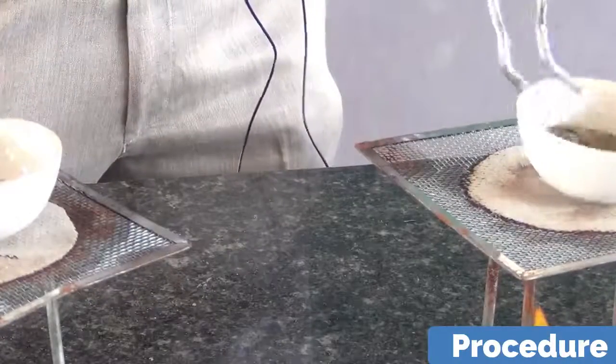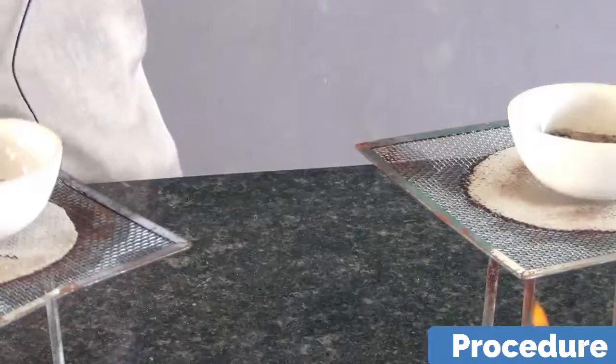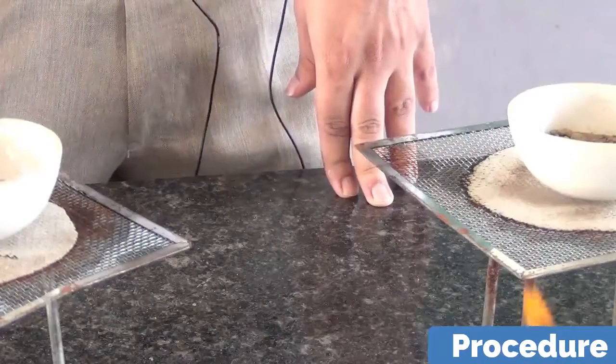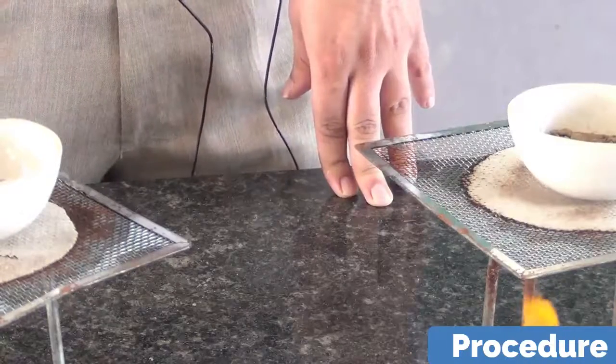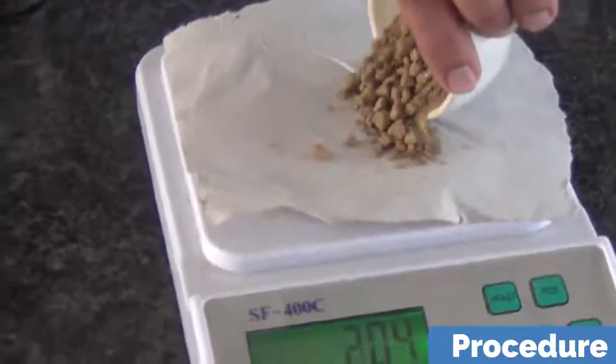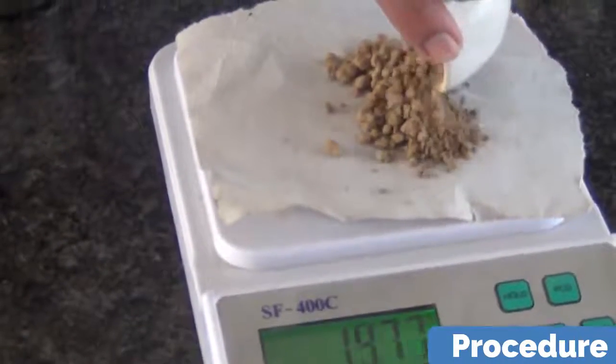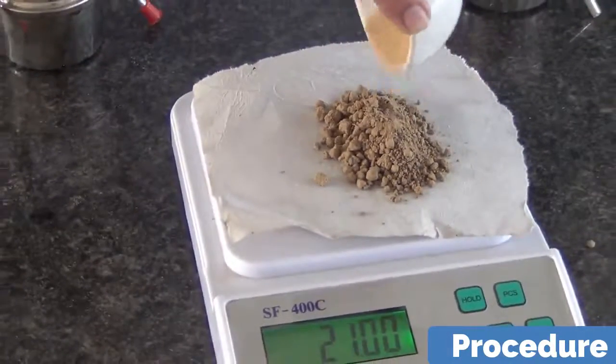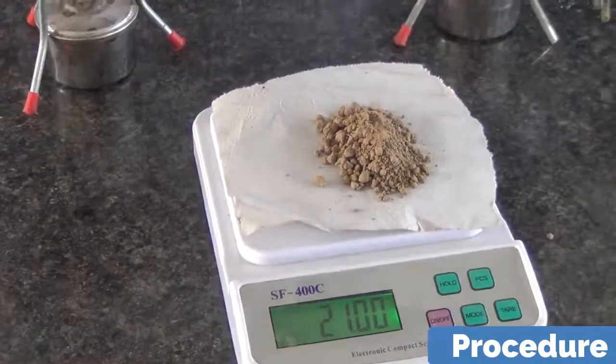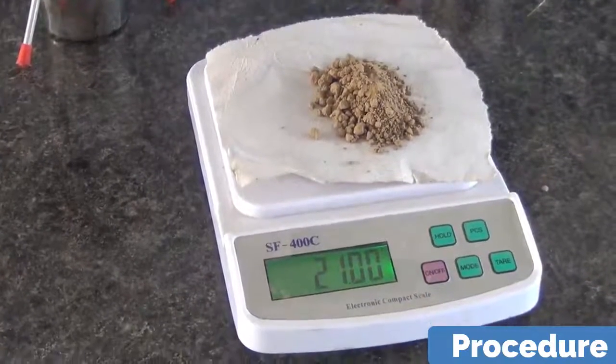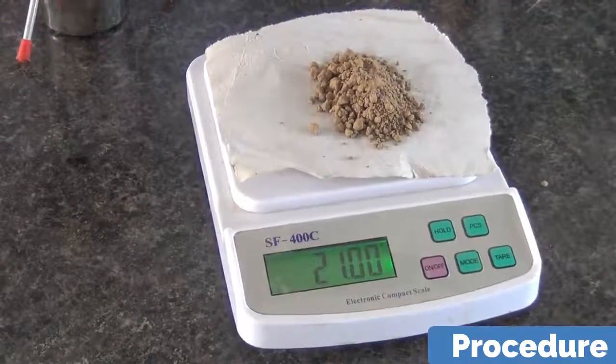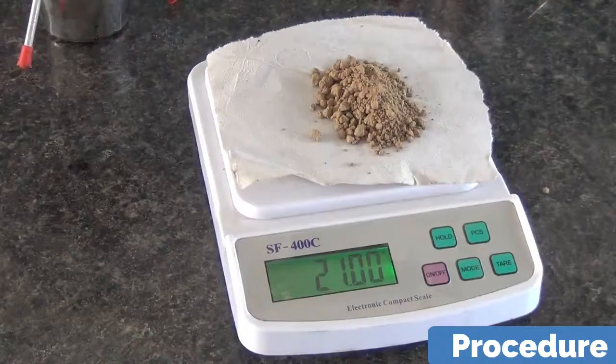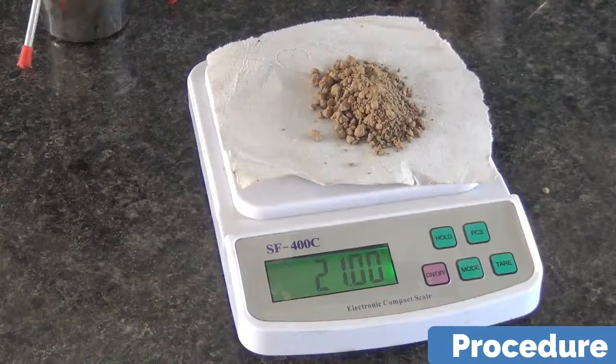Now we are going to weigh on the digital balance and find what amount of water was evaporated. For loamy soil, we are going to weigh the soil. And you observe the total weight. The total weight comes out to be 21. So we have to write this on the board.